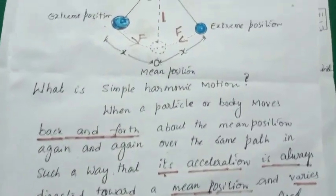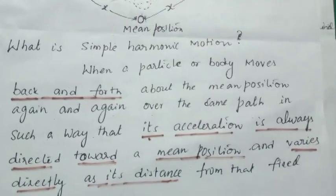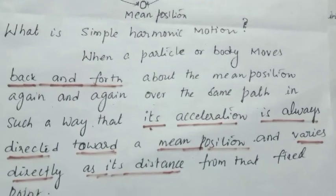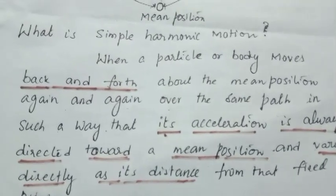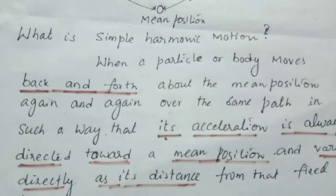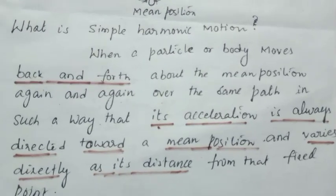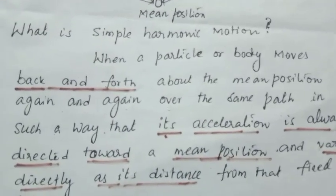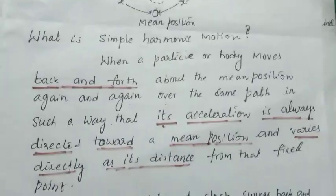Now let me give the definition of simple harmonic motion. When a particle or body moves back and forth about the mean position again and again over the same path, in such a way that its acceleration is always directed towards the mean position and varies directly as its distance from that fixed point. The key underlined points are: back and forth, and acceleration is always directed towards the mean position and varies directly as its distance from the fixed point.